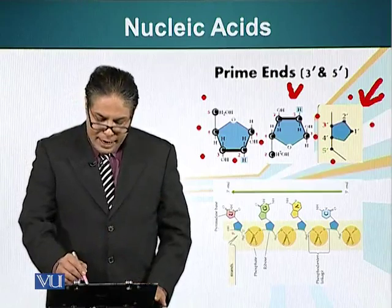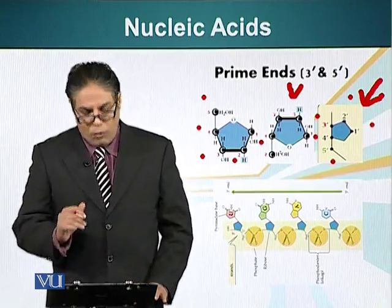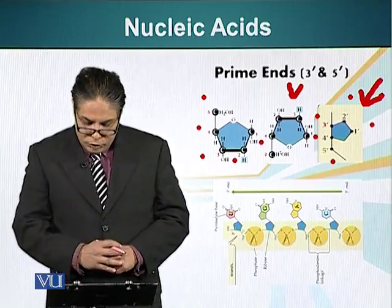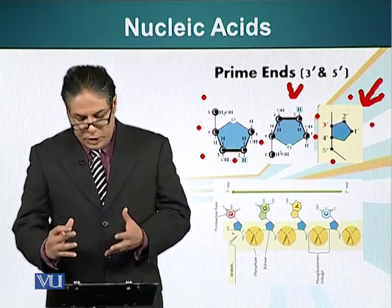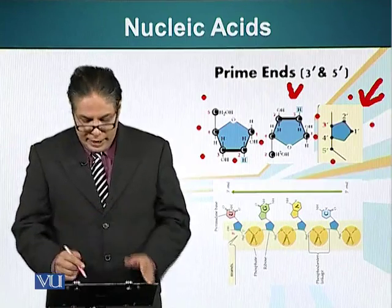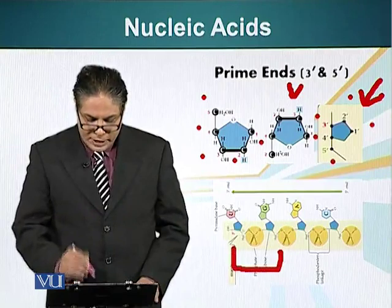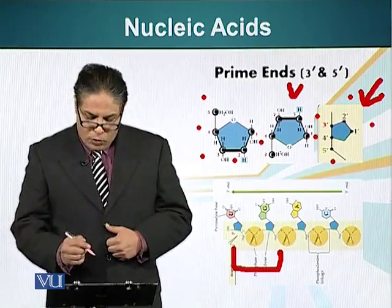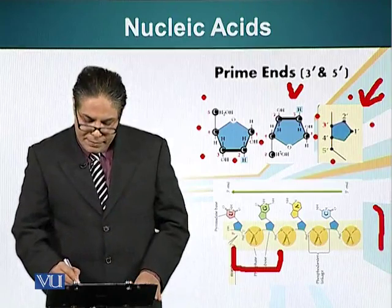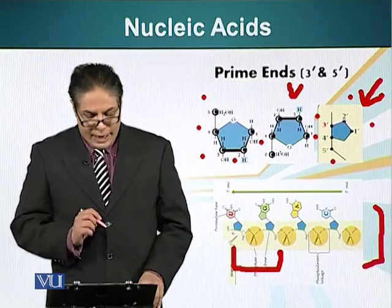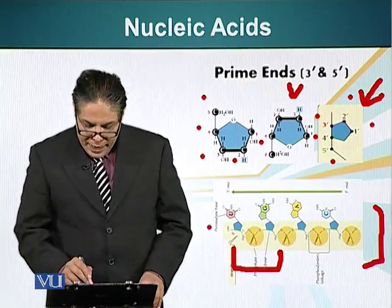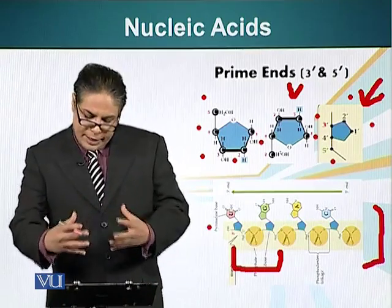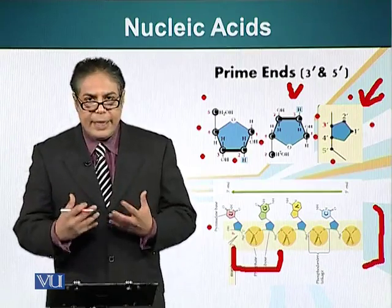The important point is that carbon atoms number 3 and 5 are linked to phosphate groups. Phosphate groups form an ester linkage with two pentose sugars, and since this bond is between a phosphate and two hydroxyl groups, it is called a phosphodiester bond. This is the backbone of DNA — please notice that the backbone of DNA is made up of alternating pentoses and phosphate groups. Next, we will look at how these molecules can contain genetic information.